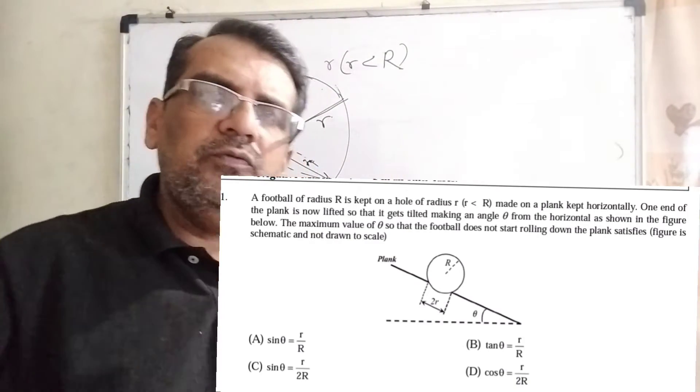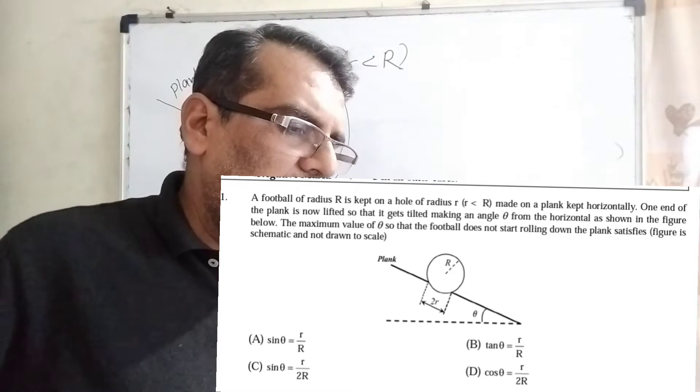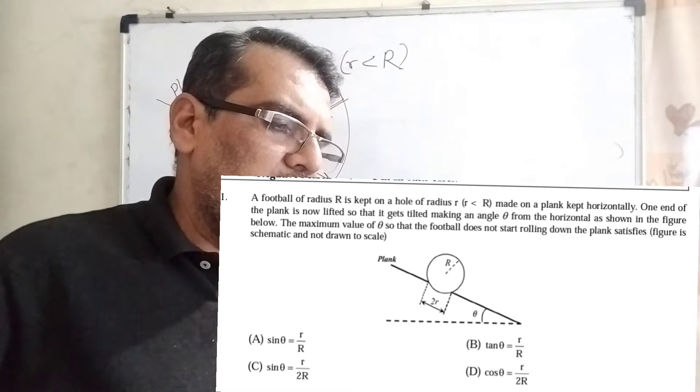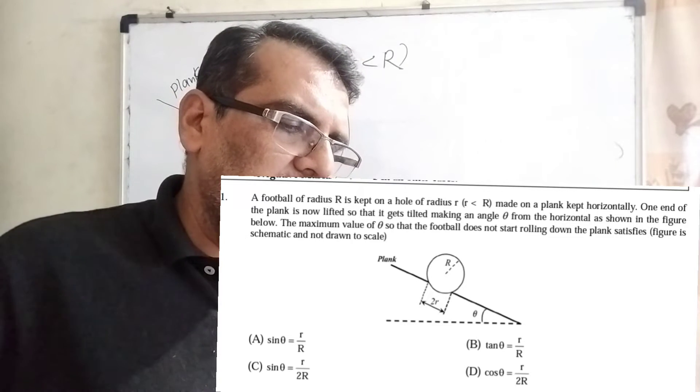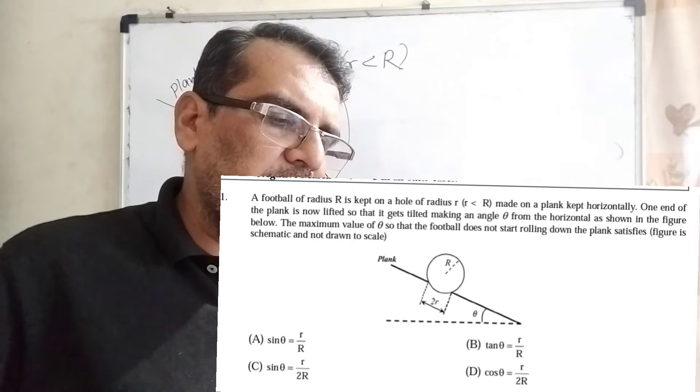Okay, let's move on to what the question says. A football of radius capital R is kept on a hole of radius small r, where small r is less than capital R, made on a plank kept horizontally.